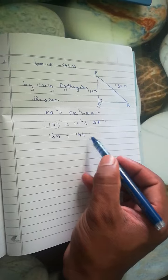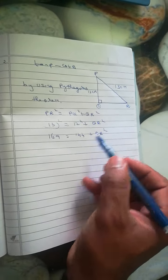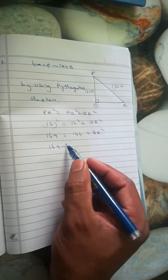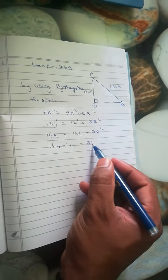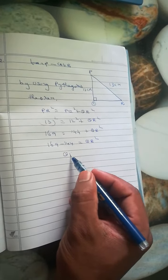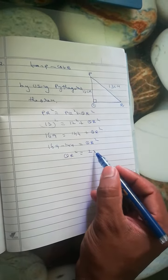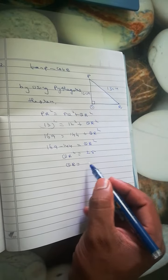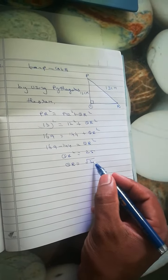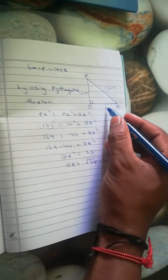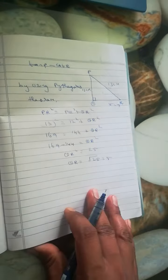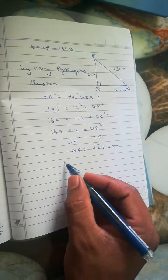169 minus 144 equals QR². Therefore QR² = 25, so QR is √25, which is 5. So QR is 5 centimeters. Now we're going to find tan P minus cot R.